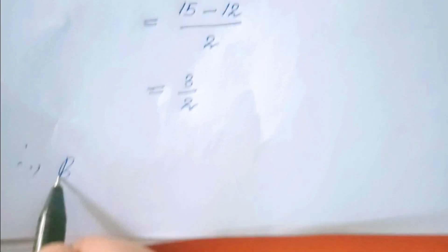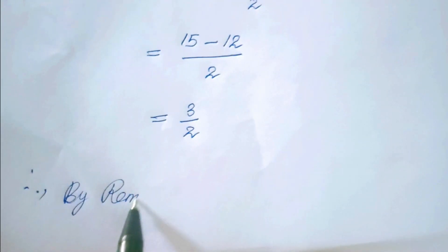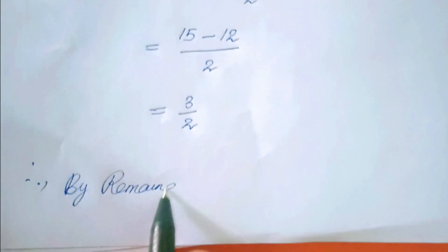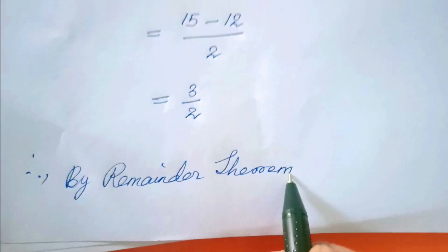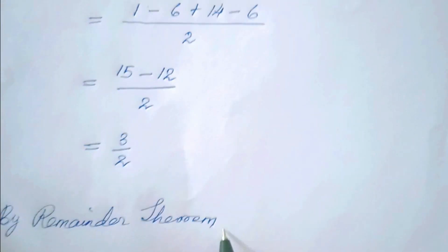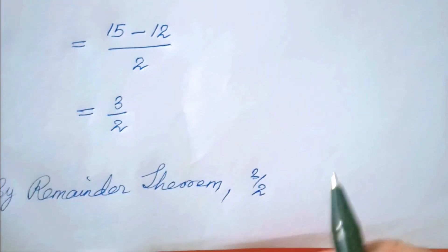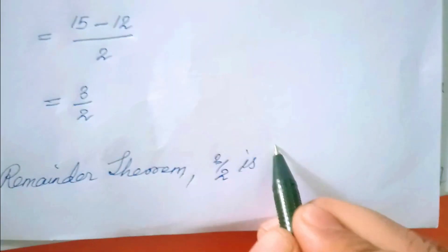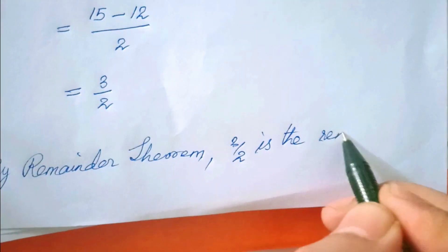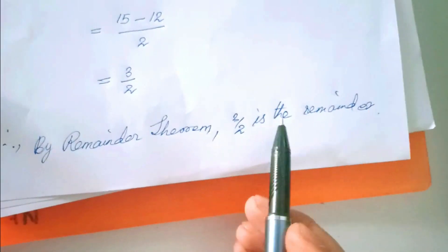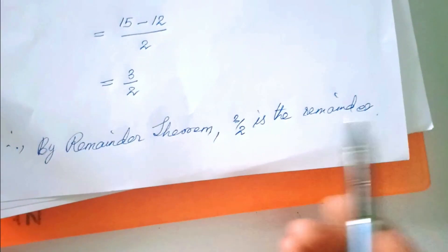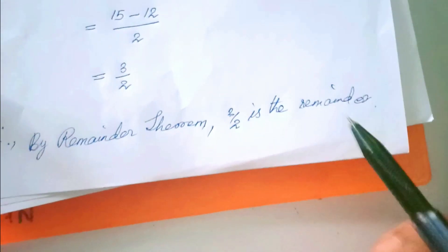Therefore, by the Remainder Theorem, 3 by 2 is the remainder. The required remainder is 3/2.